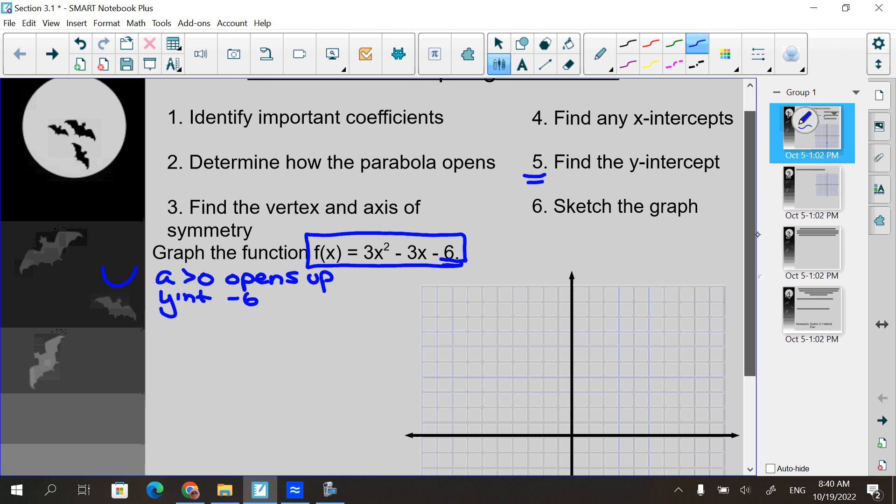How you find x-intercepts is you take your function and you set it equal to zero and you solve it. So if I take this right here, 3x squared minus 3x minus six and set it equal to zero, I could take and factor this.